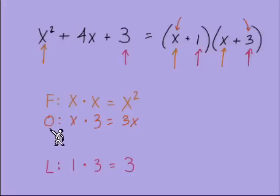Let's just see what happens with the outer and inner steps. So outer is doing the x times 3 to give us 3x. Inner is the 1 times x to give us 1x. And we have like terms, those two like terms combined will give us 4x. So we can see the three terms of our polynomial, this trinomial.